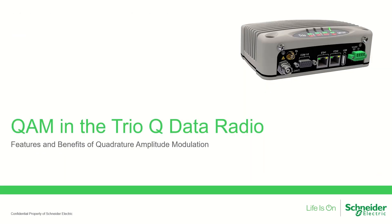With firmware version 2.4, the TRIO-Q data radio now includes quadrature amplitude modulation complemented by dynamic speed selection, working independently at each site and optimized to operate at the fastest RF speed possible while providing reliable data delivery. In addition, forward error correction and automatic repeat requests help to maximize efficiency and reliability of the channel.